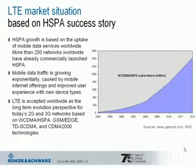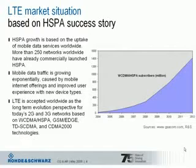Mobile data traffic is growing exponentially, caused by mobile internet offerings and improved user experience with new device types. This means there is a growing need for capacity enhancements in existing networks, and subscribers expect improvements like data rate enhancements and latency improvements. So LTE is today accepted worldwide as the long-term evolution perspective for today's 2G and 3G networks, including networks based on Wideband CDMA/HSPA, GSM-EDGE, TDS-CDMA, and CDMA-2000 technologies.